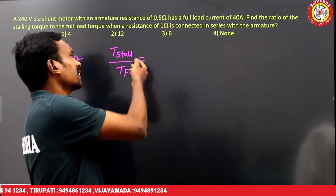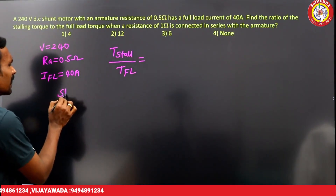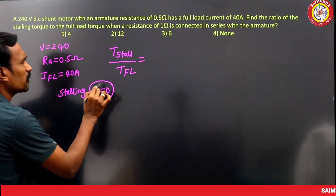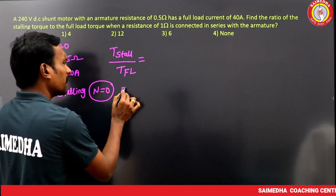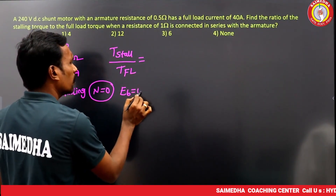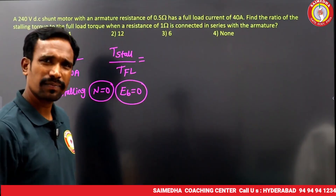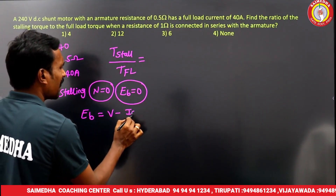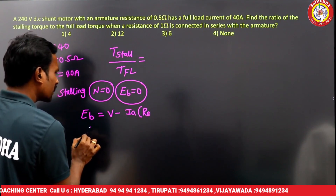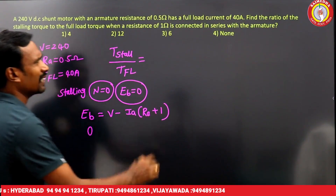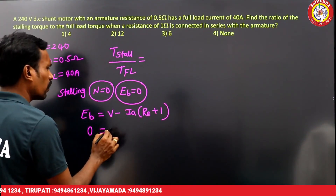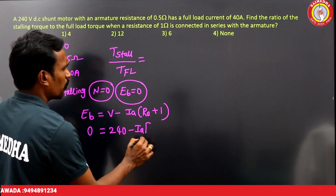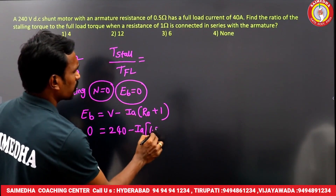Stalling means zero speed, which means back EMF is zero. With an extra 1 ohm added in series, the total resistance is Ra + 1 = 0.5 + 1 = 1.5 ohms. At stalling, Eb = 0, so: 0 = V − Ia × (Ra + Rext), giving Ia = 240 / 1.5.